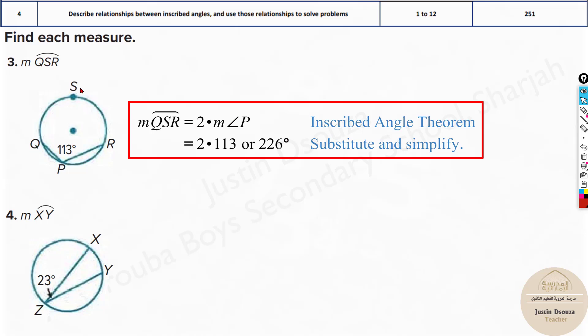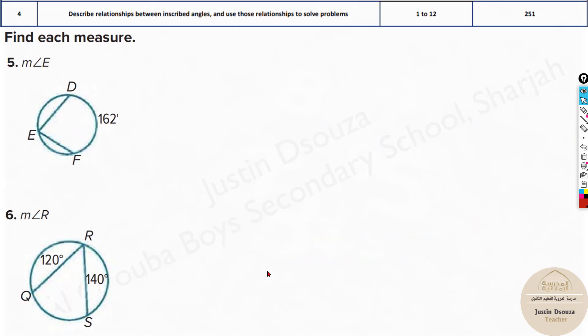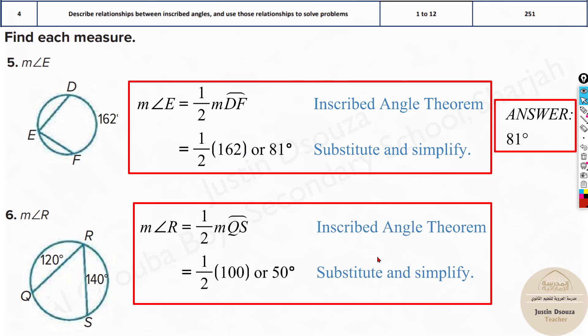Over here also it's the same thing for arc QSR. It will be 2 times 113 degrees. And this is 23. So this will be 2 times 23, 46 would be the answer. Try these by yourselves and then check for the answers.